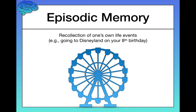In contrast, episodic memory is a recollection of one's own life events — your own personal memories about events that have happened in your life. For example, what was your favorite birthday party? Going to Disneyland on your eighth birthday might be an episodic memory for you. This is a form of explicit memory because you can tell me about it, and a form of long-term memory because it was way more than 20 seconds ago.